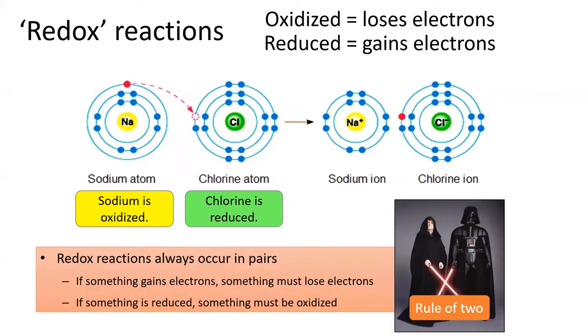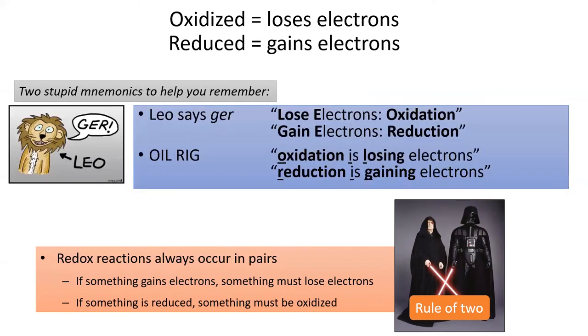Redox reactions always involve a pair of reactants. If something gains electrons, something else must lose electrons. In other words, if something is oxidized, something else must be reduced. I have two stupid mnemonics to help you remember who gains and who loses electrons. You can either think about a lion named Leo, who says grr. Leo means lose electron oxidation. Grr means gain electrons, reduction. Otherwise, you can remember oil rig. Oxidation is losing, reduction is gaining.